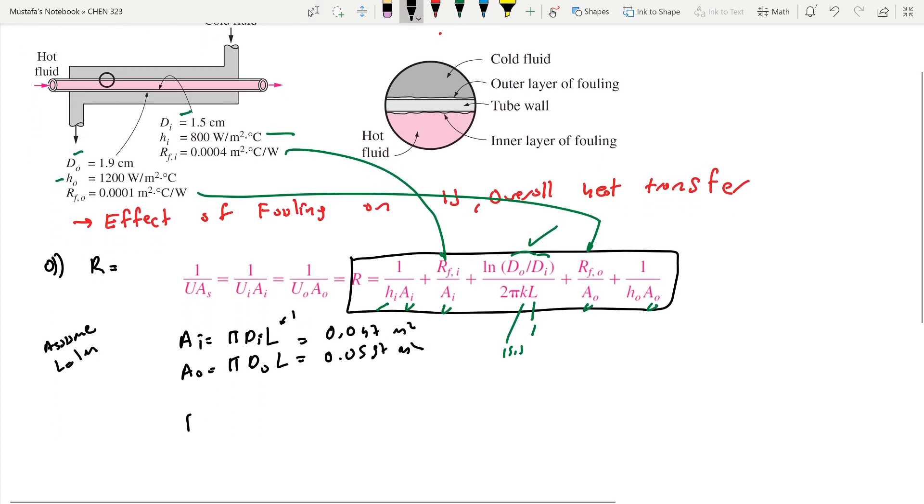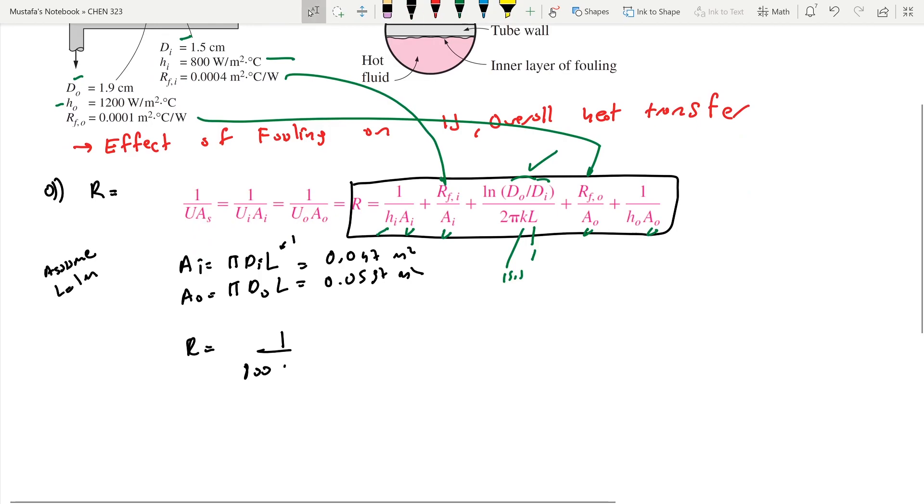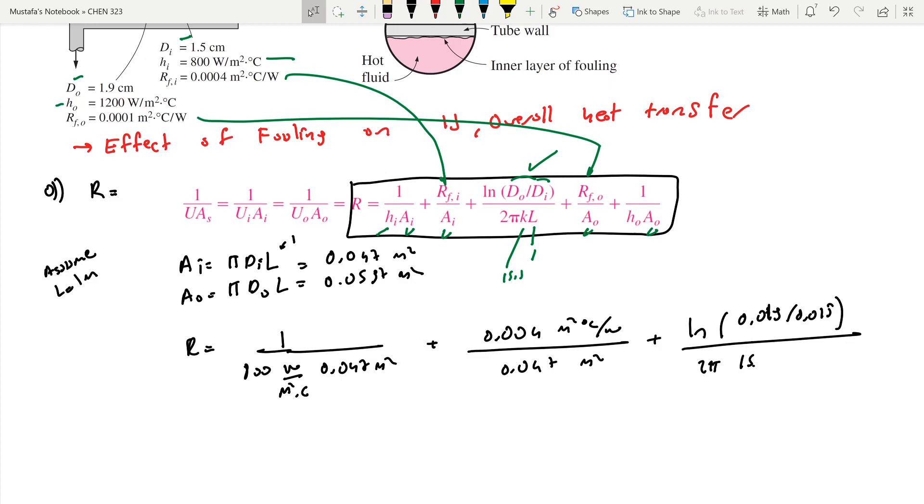So 1 over 800 W/m²·°C times 0.047 m² plus 0.0004 m²·°C/W divided by 0.047 m² plus ln(0.019/0.015) divided by 2π·k where k is 15.1 W/m·°C and length is one meter.